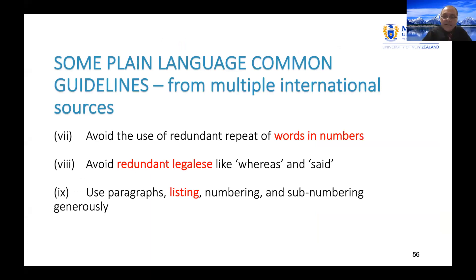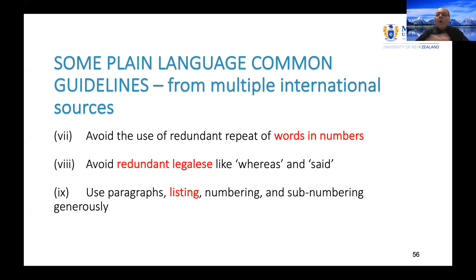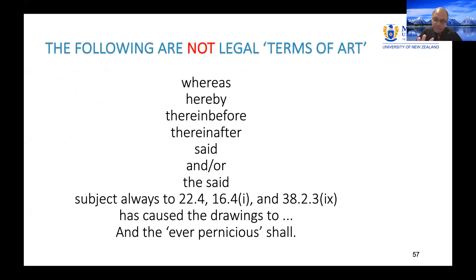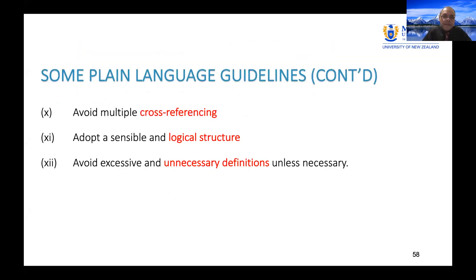Use paragraphs and listing, which is good practice. These archaic words — 'whereas,' 'hereinbefore,' 'thereinbefore,' 'thereinafter,' 'said,' 'and/or,' 'subject always' — are not legal terms of art. Multiple cross-referencing, 'subject always to this, that, and the other,' is dead drafting. A sensible logical structure in a construction contract means collecting all time clauses together — commencement, progress, programme, extension of time, completion, non-completion — then all money clauses — bonds, insurance, payment, retention, final accounts — then all quality clauses. Why can't all construction contracts be rearranged into a logical structure?